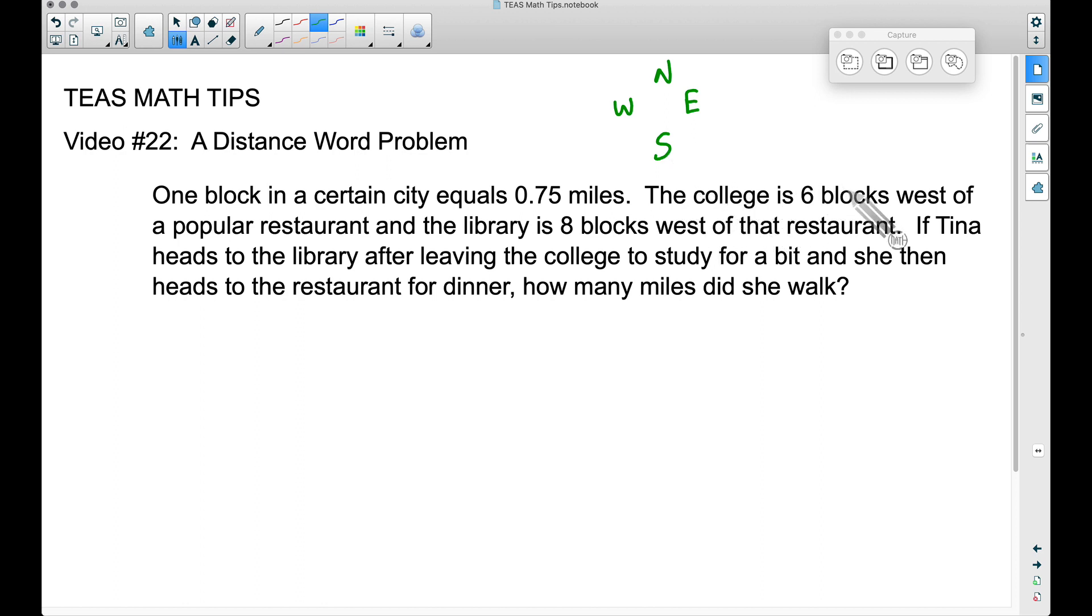So we have the college. It is six blocks west of a popular restaurant. So if I put my college here, on paper west is going to be to the left. And it's not really that big of a deal if you get west and east mixed up, but I just want to point that out anyway. So the college is six blocks west of a popular restaurant. So the college is going to be to the left, to the west of this restaurant. And what we know about this is that they are six blocks from each other.